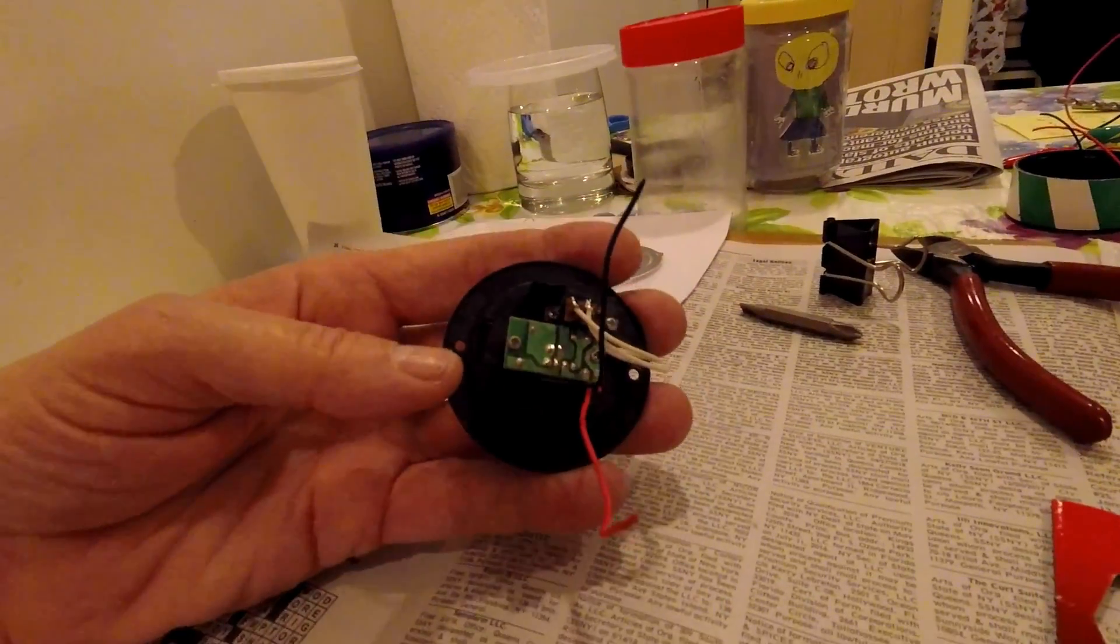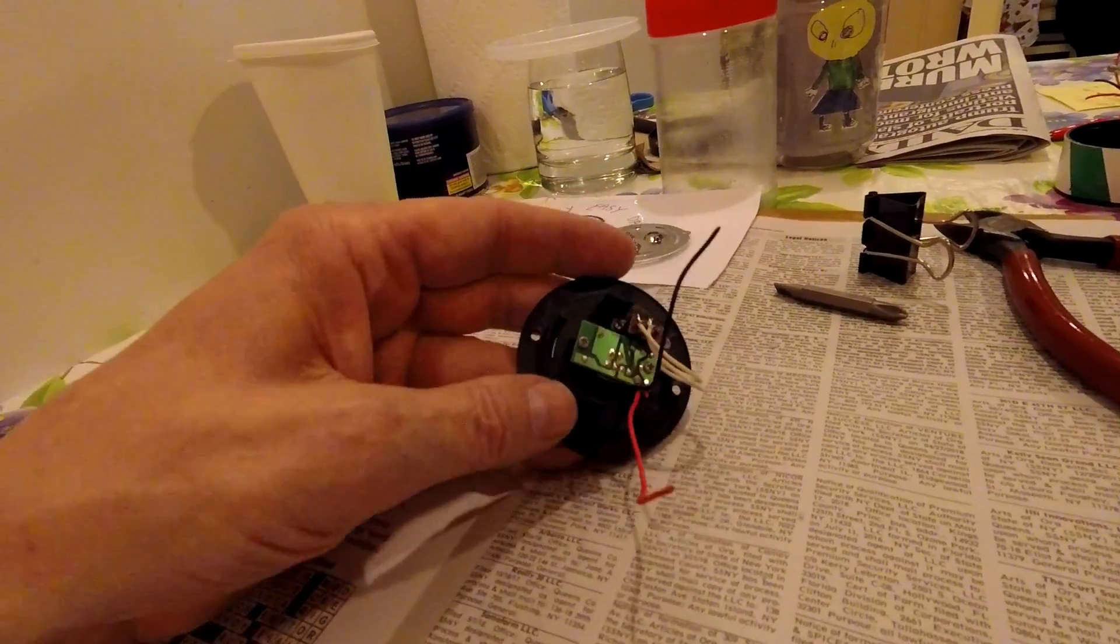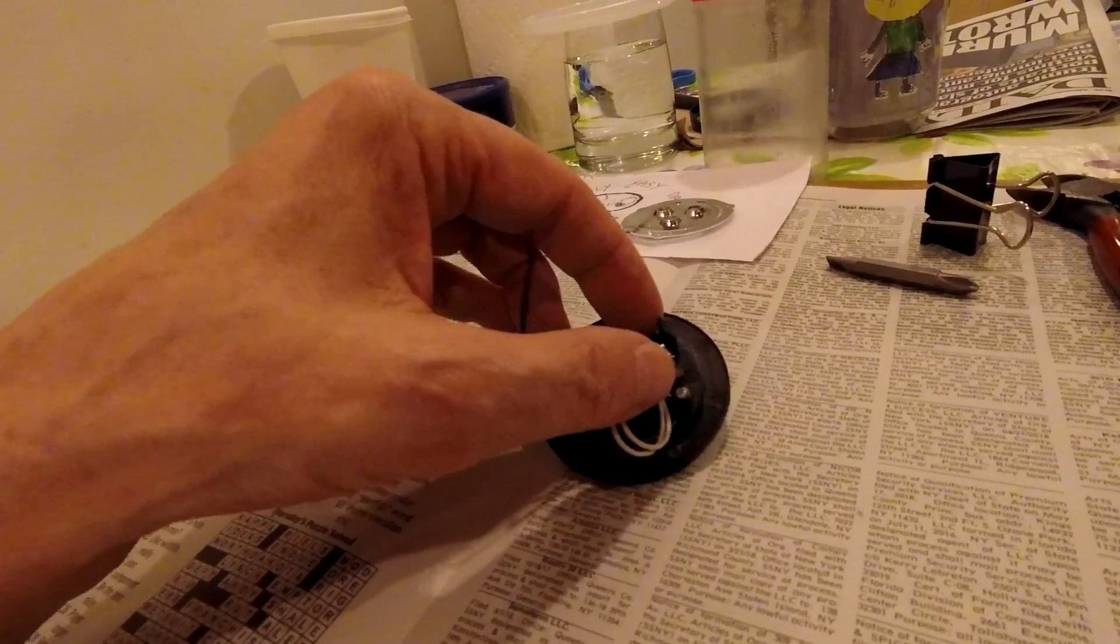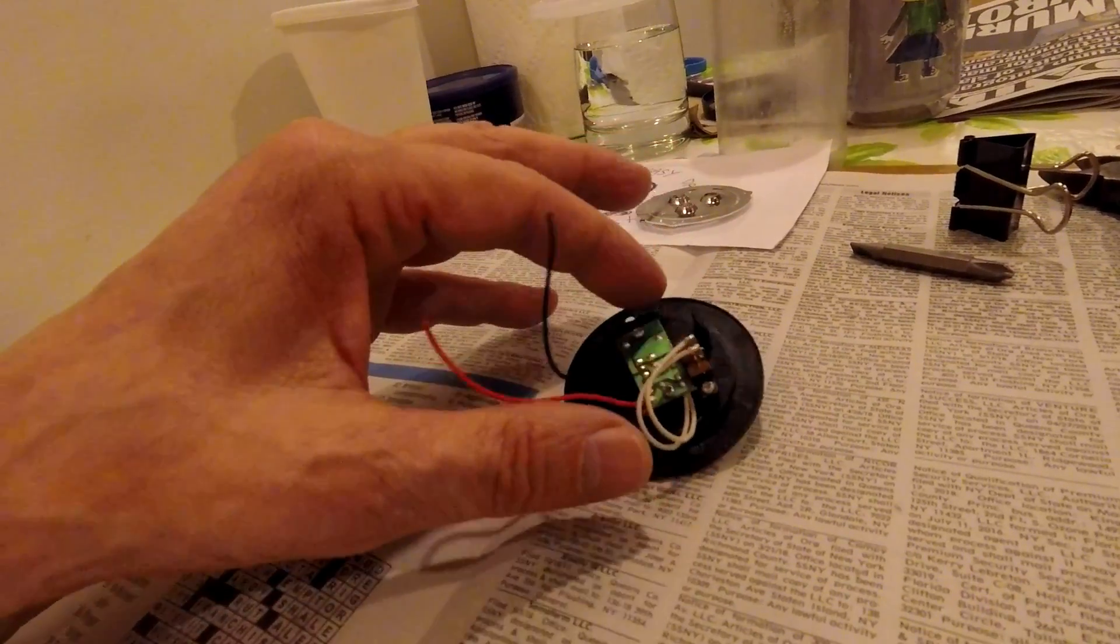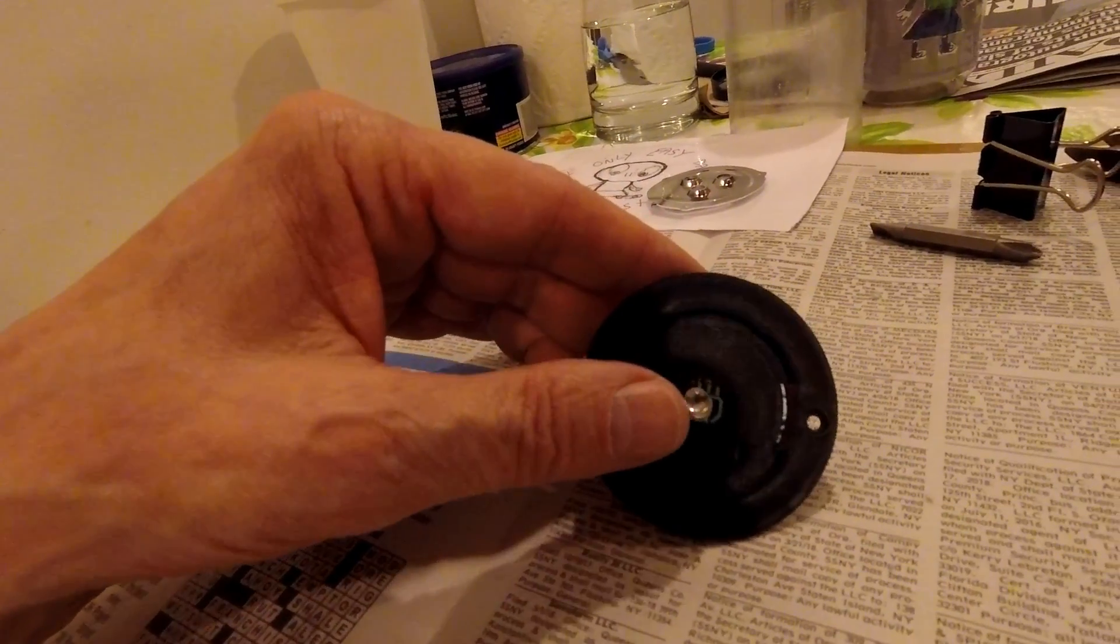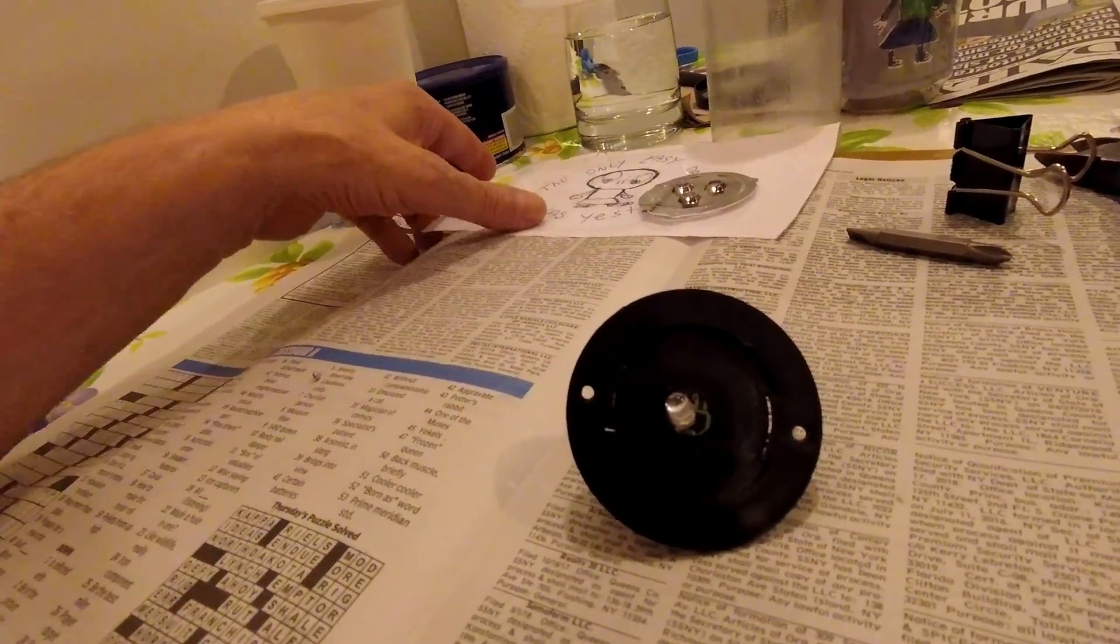Okay, so the red and the black wire is where the battery goes. I will solder this together, take the switch out, take this completely out, and then I will add two light bulbs for the two eyes.